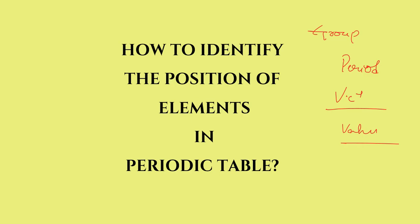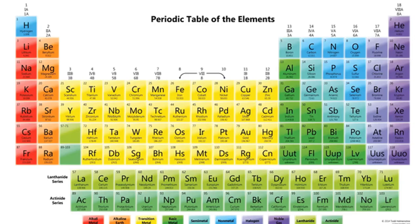As you all know, the elements have been arranged in the modern periodic table. We have 118 elements right now. The horizontal rows are called periods and the vertical columns are called groups. We have a total of 18 groups and 7 periods for now.